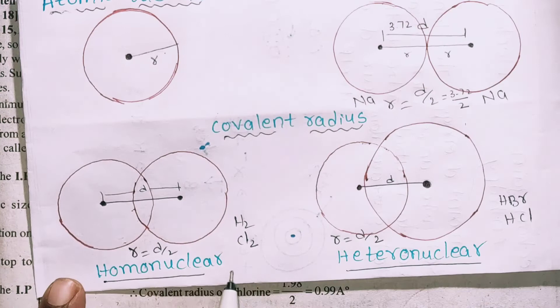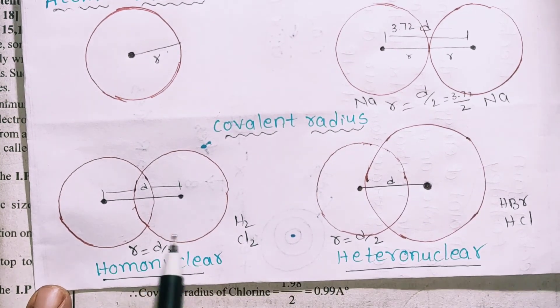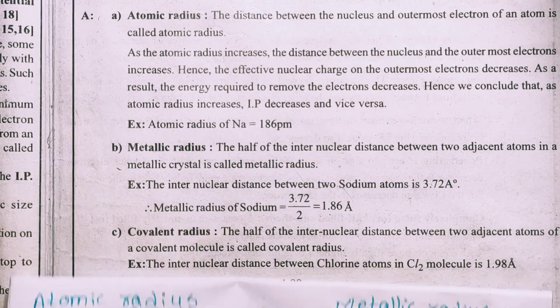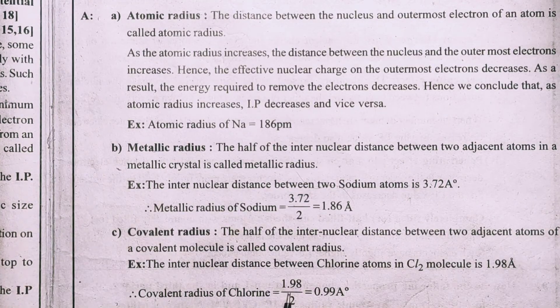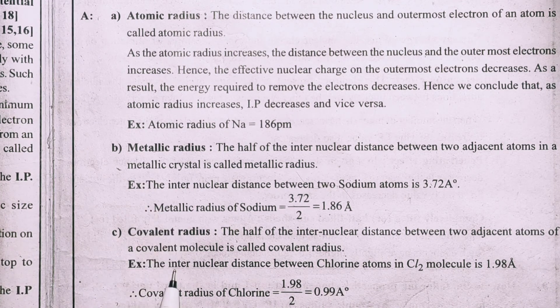For example, for hydrogen chloride (HCl), the covalent radius of chlorine is 0.99 angstroms. So this covers atomic radius, metallic radius, and covalent radius.